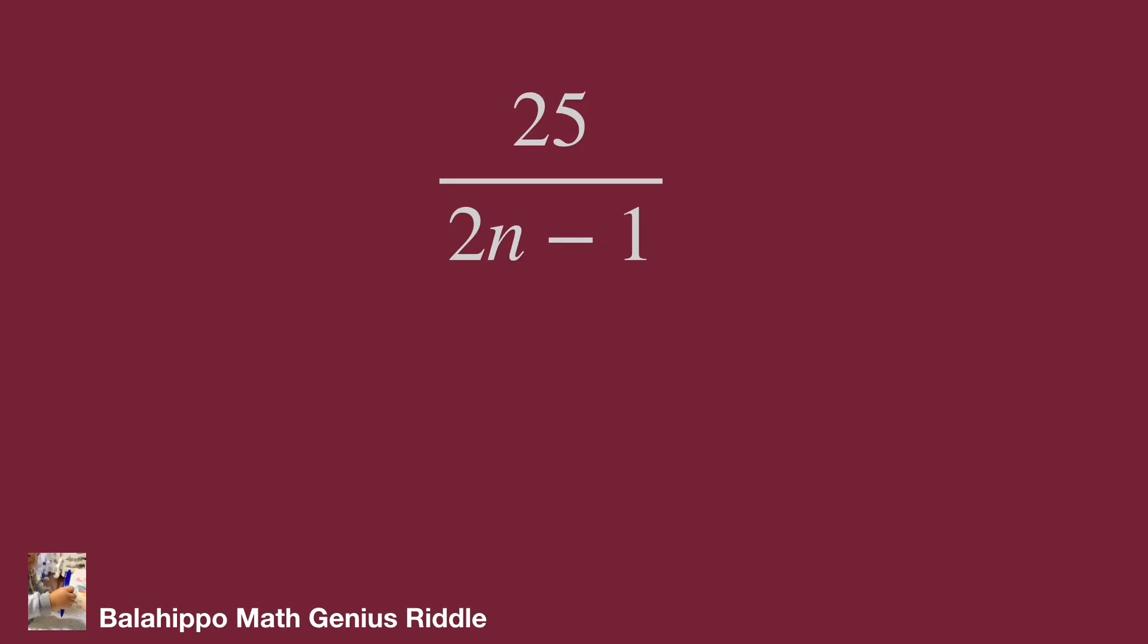To meet this criteria, 2n plus 1 should be the factor of 25. So 2n plus 1 should be equal to 1, 5, 25, and the negative numbers minus 1, minus 5, minus 25.